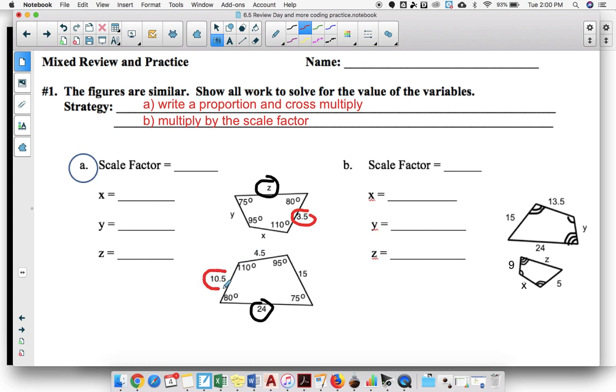Notice there's a variable so I'm not going to use that for my scale factor. The red ones match or they correspond if we were to rotate the shapes, and since those values don't contain a variable, that creates our scale factor. So 3.5 over 10.5. If you wanted to write it the other way you could since it didn't say small to big or big to small.